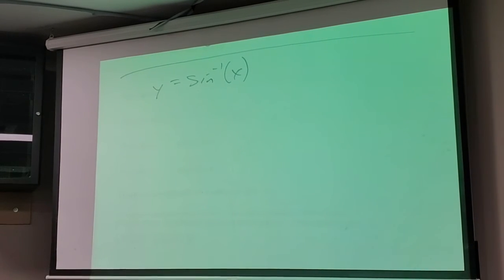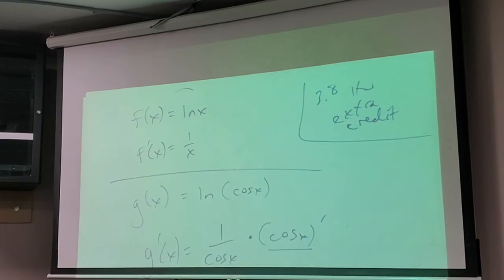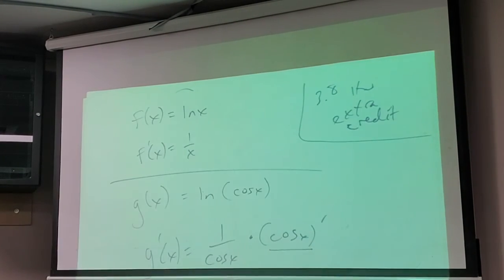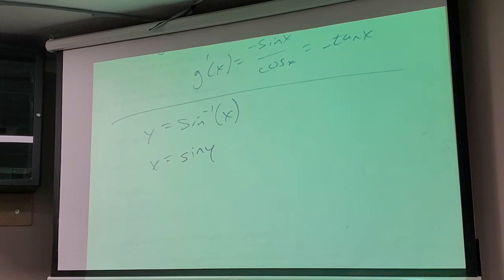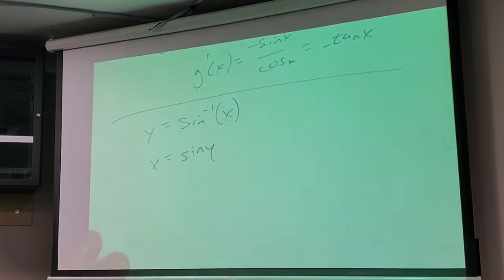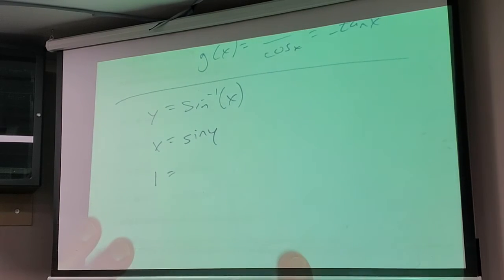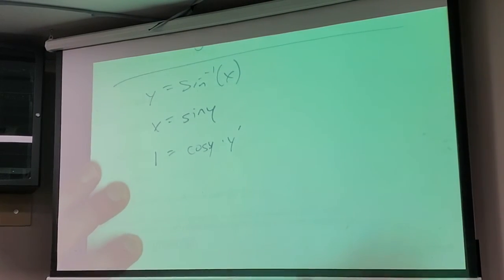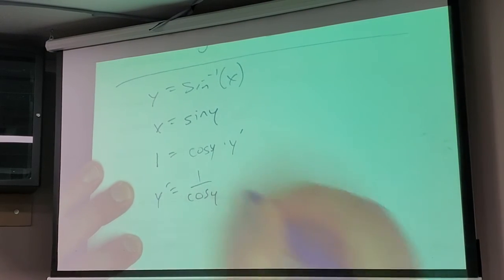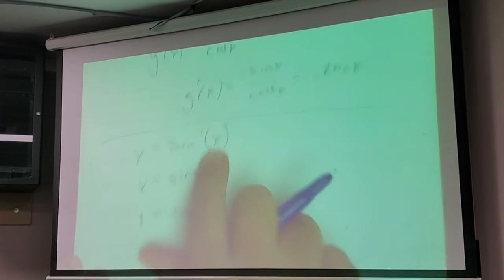How would I do the derivative of inverse sine of x? We know the process now. I had this weird thing — I rewrote it in a different form based on functions I know. So if f(x) equals arcsin(x), I write it as y equals arcsin(x), which means x equals sine y. Then I take the derivative of both sides: derivative of x is 1, derivative of sine y is cosine y times y prime. So y prime equals 1 over cosine y.